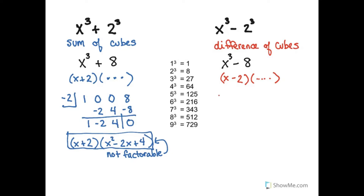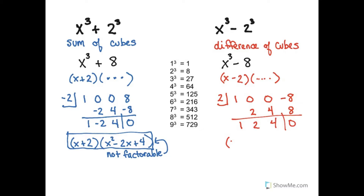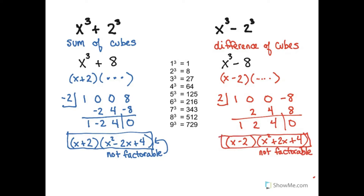Now if I factor the difference of cubes using synthetic division, I write 2, the opposite of the factor in the binomial. And the difference is 1x cubed, 0x squared, 0x, and negative 8. I bring down the 1, multiply by 2. 0 plus 2 is 2. 2 times 2 is 4. 4 and 0 is 4. And 4 times 2 is 8, so the remainder is 0. That means x cubed minus 8 factors to x minus 2 times x squared plus 2x plus 4. Again, the quadratic is not factorable further.